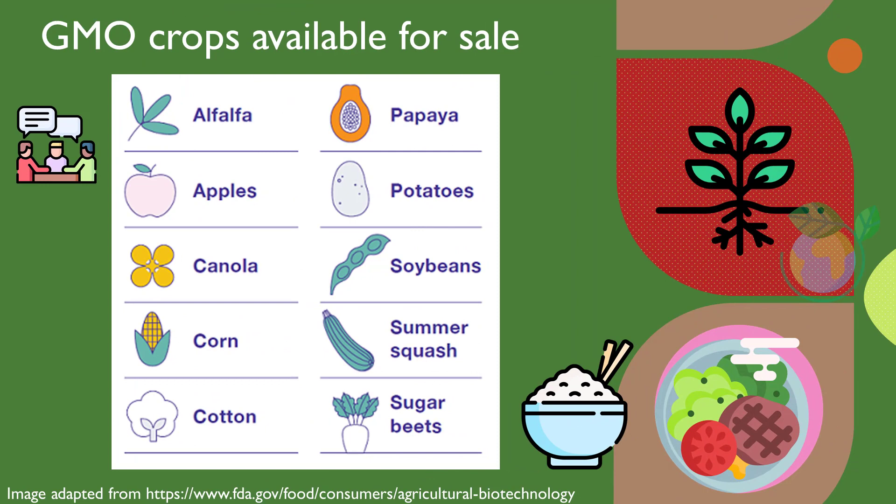Most genetically modified organisms, abbreviated as GMO crops, are used in food for animals like cows, chickens, and fish. They are also used to make ingredients that are then used in food products like cereal, snack chips, and vegetable oils.